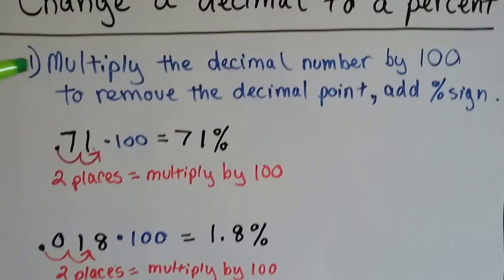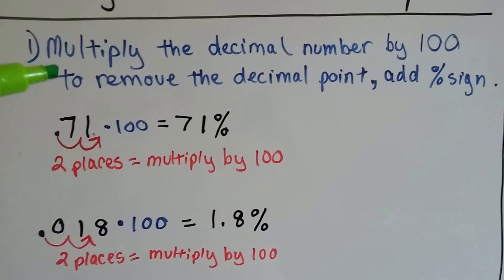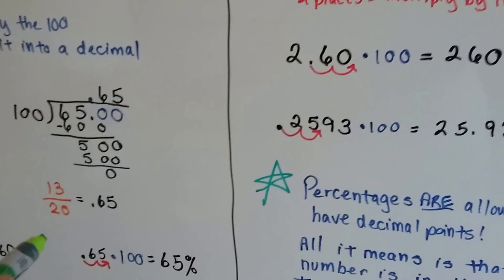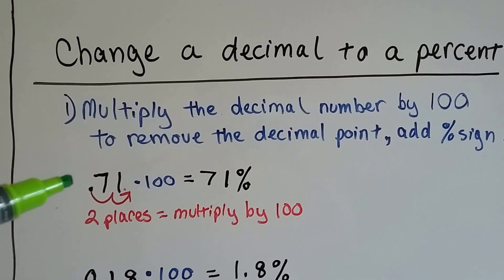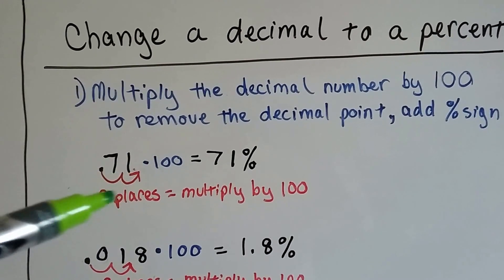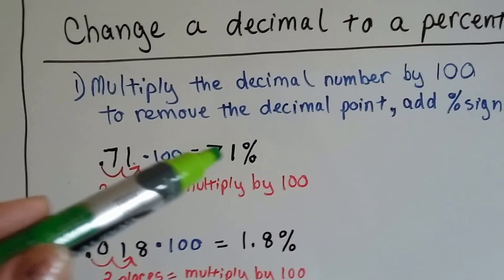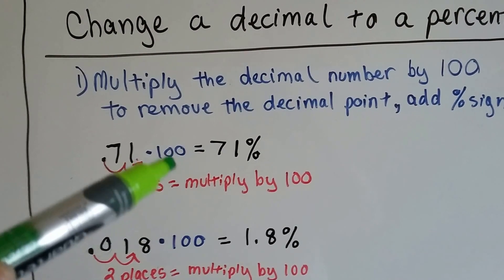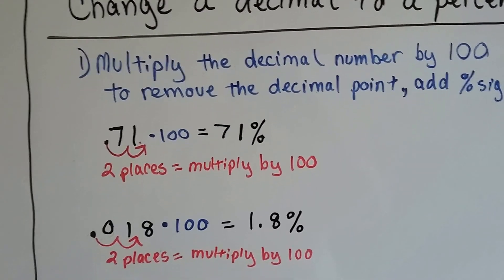We multiply the decimal number by 100 to remove the decimal point like we did down here. And then we add the percent sign. So .71, 71 one-hundredths, multiplied by 100, becomes 71%. We move it two places and add the percentage sign.